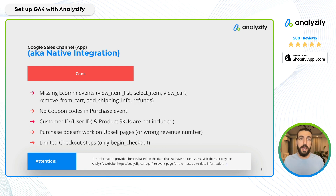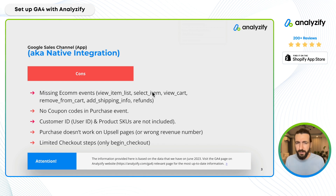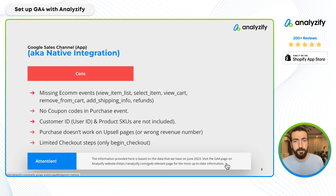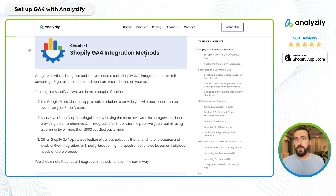I have a longer video explaining Shopify's native GA4 integration — I'll link it somewhere. The main cons of the native integration are missing e-commerce events: view_item_list, select_item, view_cart, remove_from_cart, add_shipping_info, and refunds. These are an important set of events — if you think of an e-commerce funnel and remove them, the funnel becomes quite weak. Also, no coupon codes in the purchase event, no customer ID or user ID, no product SKUs, purchase event issues on upsell pages, and checkout steps limited to only begin_checkout. Note: by the time you watch this, some details may have changed — visit Analyzify's page for the most up-to-date information.